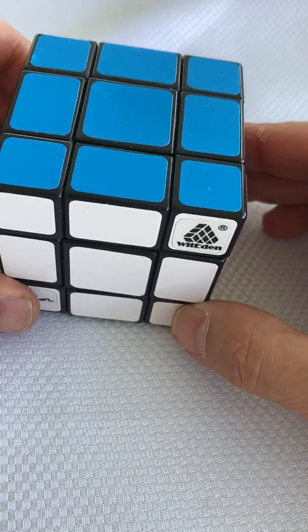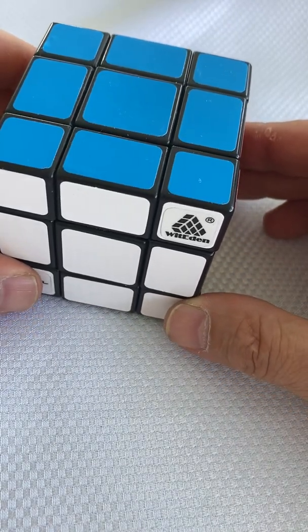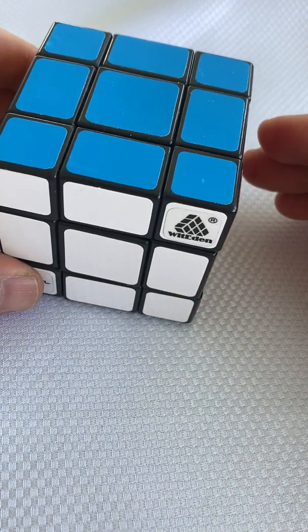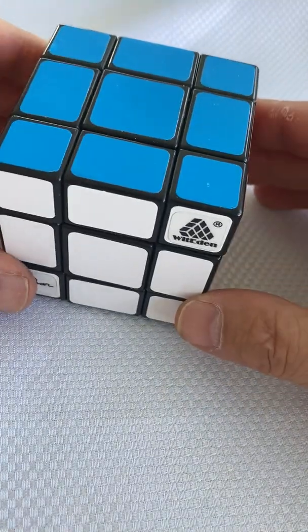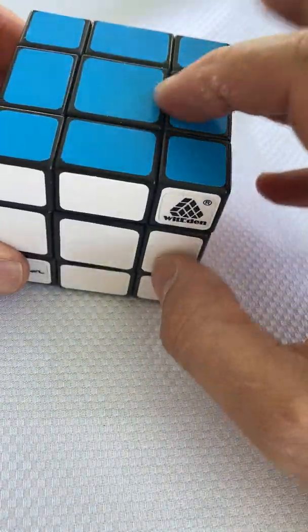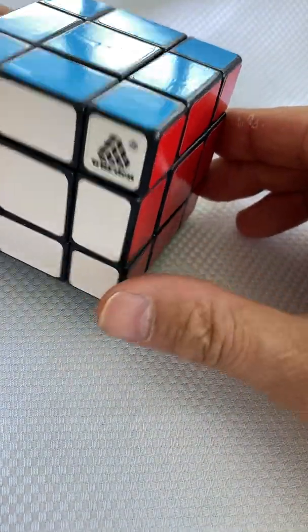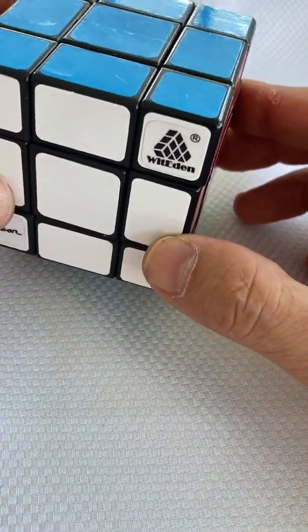I'll start with a regular cube and rather than doing standard notation, I'll attach it in the notes maybe, but I kind of think of it a different way. So I usually orient blue on the top and white to the front.